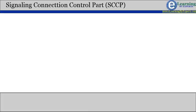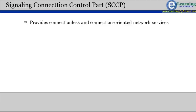Signaling connection control part or SCCP provides connectionless and connection-oriented network services via MTP3 for the transfer of signaling messages between SSPs.